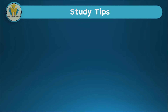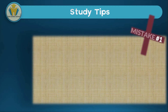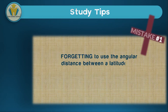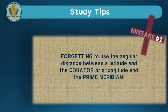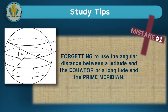Now we get to the last part of our lesson where we're sharing some study tips. Usually when students are answering questions under angular distances, there are some common mistakes they tend to make. The first mistake is forgetting to use the angular distance between a latitude and the equator, or forgetting to use the angular distance between a longitude and the prime meridian. In this diagram we've got some latitudes: 30 degrees north, the equator, latitude A and latitude B. Latitude A is quite simple as we have the angular distance given — we just have to know whether it's on the northern or southern hemisphere. Since it's below the equator, A is simply 20 degrees south.